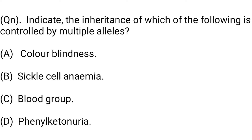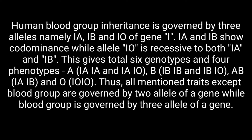Question 1: Indicate the inheritance of which of the following is controlled by multiple alleles. Option A: colorblindness. Option B: sickle cell anemia. Option C: blood group. Option D: phenylketonuria.